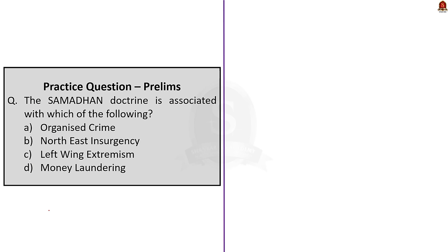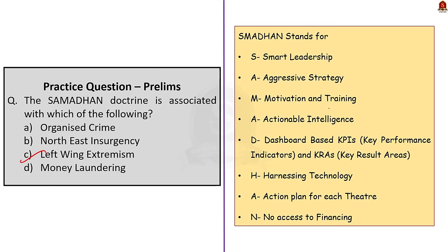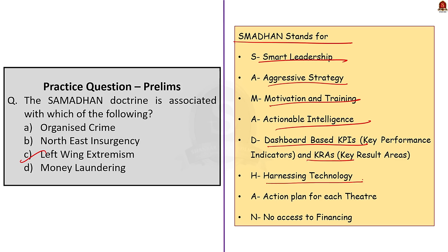The Samadhan doctrine is associated with which of the following? The correct answer is option C — left wing extremism. Samadhan is a doctrine proposed as a one-stop solution for the left wing extremism problem in India. Samadhan stands for: Smart leadership, Aggressive strategy, Motivation and training, Actionable intelligence, Dashboard-based KPIs and KRAs, Harnessing technology, Action plan for each theater, and No access to financing.